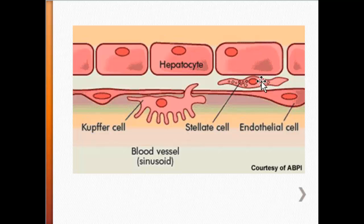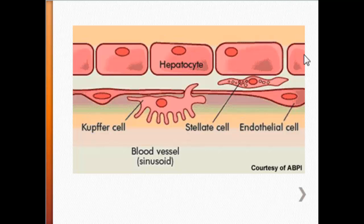In the perisinusoidal space, or space of Disse, you have the stellate cells. The stellate cells are star-shaped with cytoplasm rich in lipid vesicles containing vitamin A. Their job is to secrete the main constituent materials of the matrix, including type 3 collagen and reticulin. These cells are very important in liver regeneration following injury or surgery because they secrete lots of growth factors and can replace damaged hepatocytes by secreting collagen and other structural proteins.